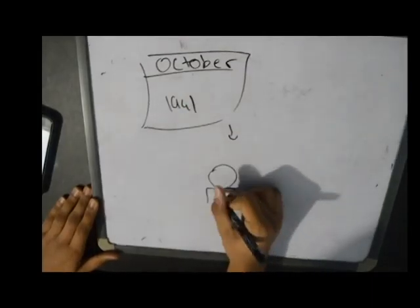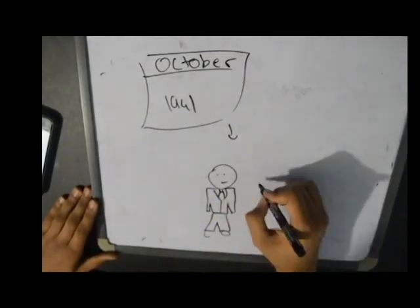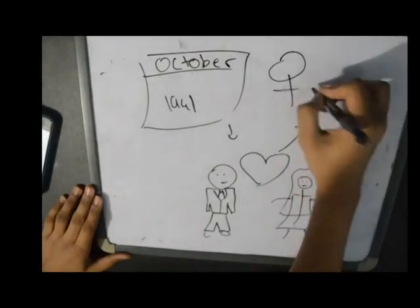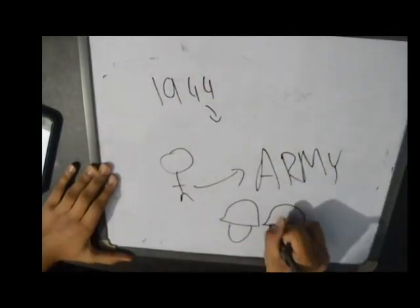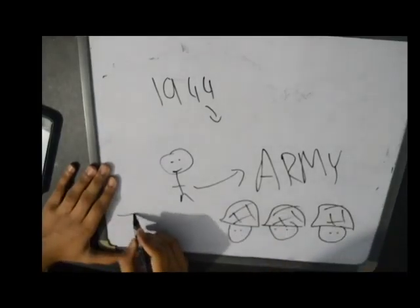In October of 1941, Martin got married to Elizabeth Ann McDonald, and they had four children together. During World War II in 1944, Dean Martin was drafted into the United States Army.